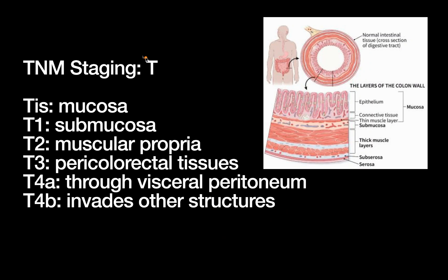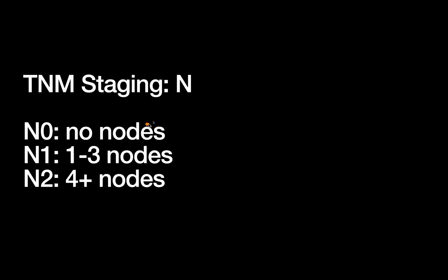Now the TNM staging in more detail. T stands for tumor. Tis is carcinoma in situ, confined to the mucosa. T1 involves the submucosa, T2 the muscularis propria. T3 invades past the muscularis propria but does not invade the serosa or visceral peritoneum. T4 is split into T4a, which penetrates through the visceral peritoneum, and T4b, which invades other structures. A key surgical distinction is T2 versus T3, which relates to adjuvant chemotherapy.